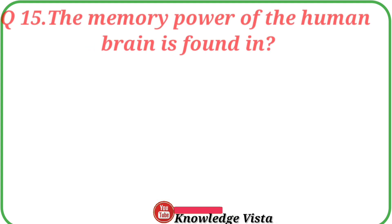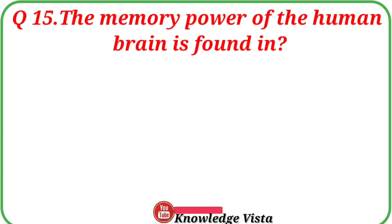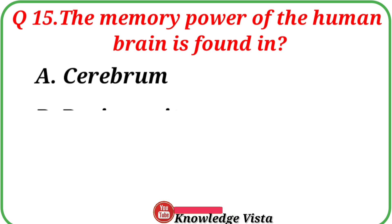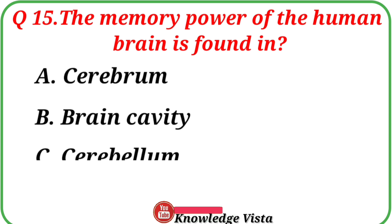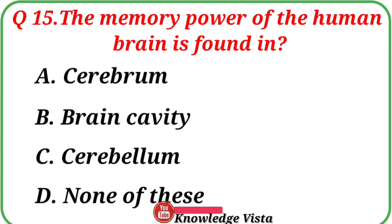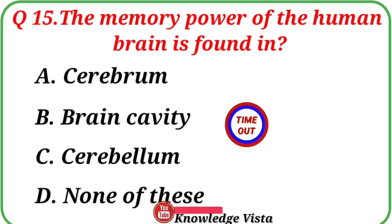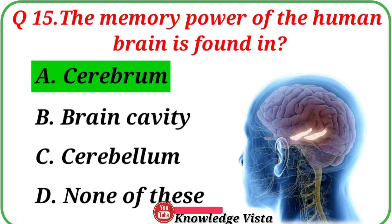Question number 15: The memory power of the human brain is found in. Your options are: A. Cerebrum, B. Brain cavity, C. Cerebellum, D. None of these. Correct answer is option A, Cerebrum. Cerebrum is the part of the human brain responsible for memory power.